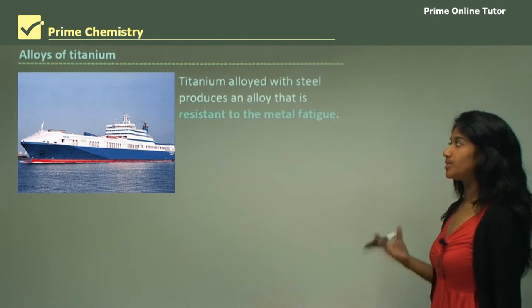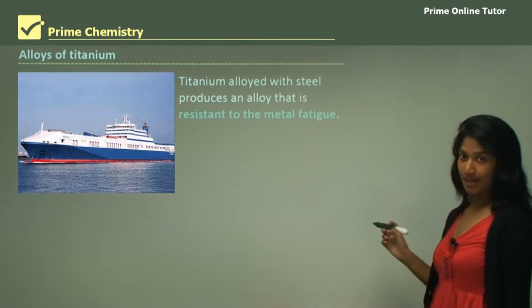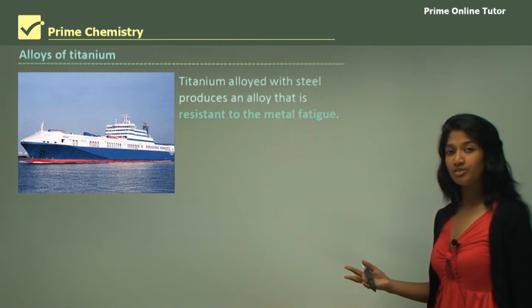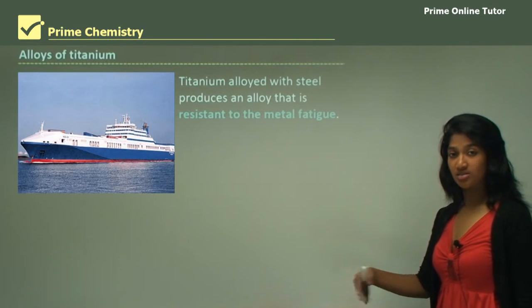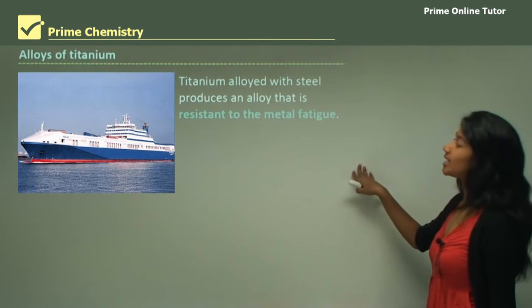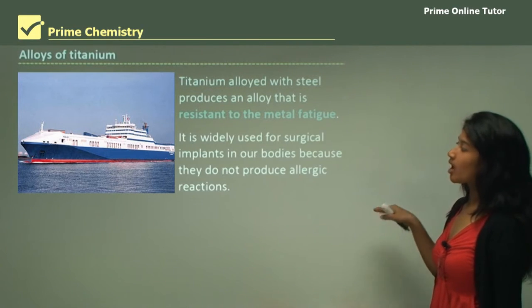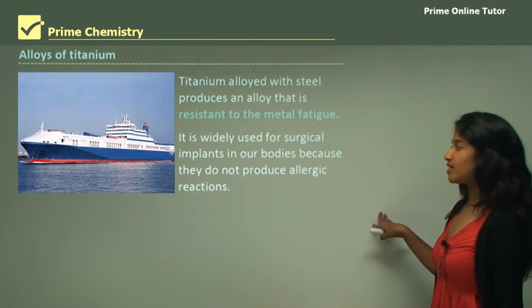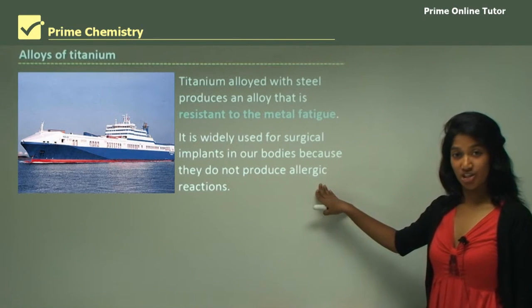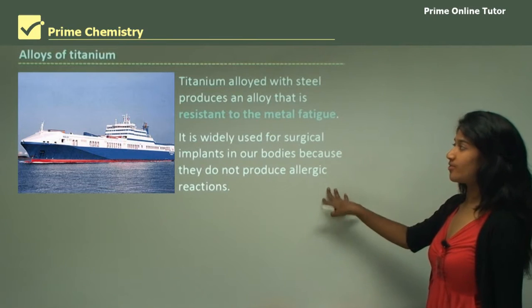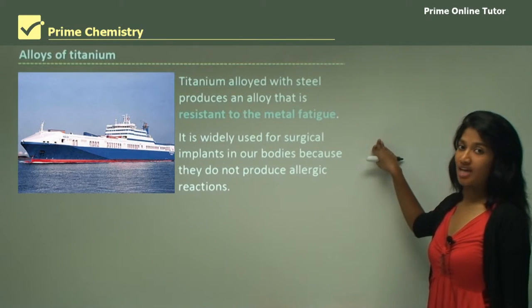Titanium alloyed with steel produces an alloy that is resistant to metal fatigue. Metal fatigue refers to a metal wearing out structurally as it is used. Titanium is also widely used for surgical implants in our bodies because it does not produce any allergic reactions. These are all modern uses of titanium.